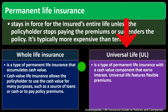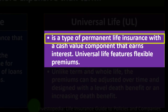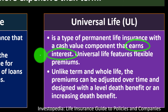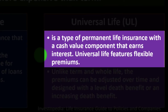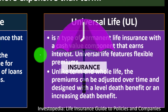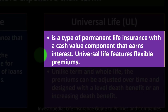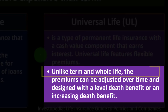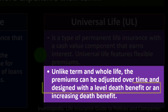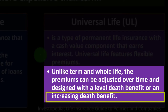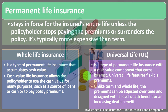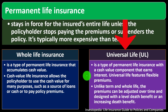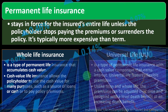Universal life — UL — is a type of permanent life insurance with a cash value component that earns interest. Investments are things that earn interest, so it's a little different from term life, where you're simply buying life insurance. Universal life features flexible premiums; unlike term and whole life, premiums can be adjusted over time and designed with a level death benefit or an increasing death benefit. From my experience, most people recommend purchasing something you know what you're purchasing — if buying life insurance, just buy life insurance.